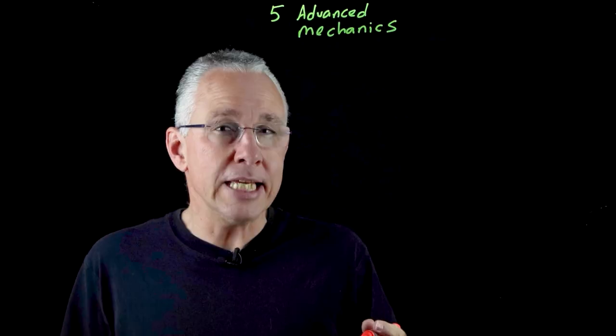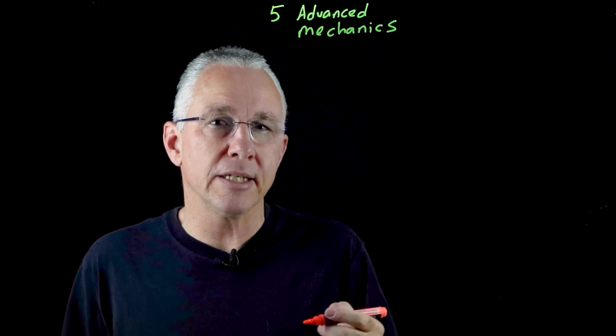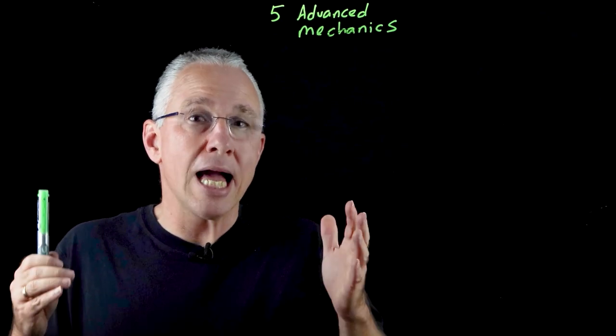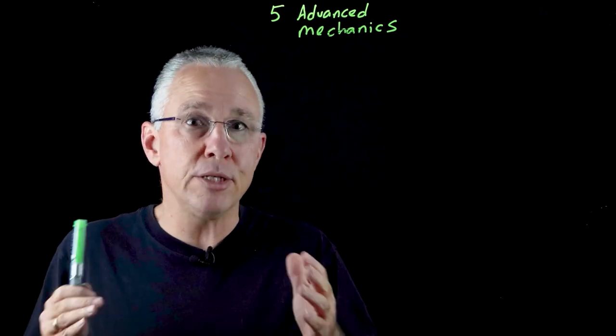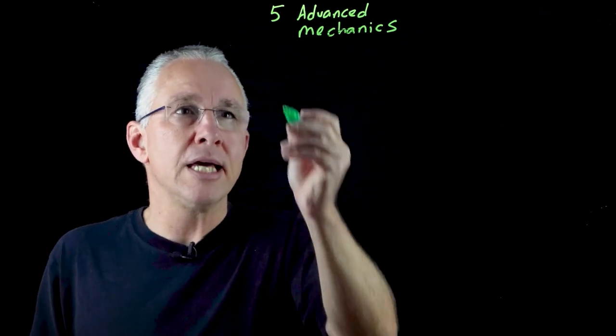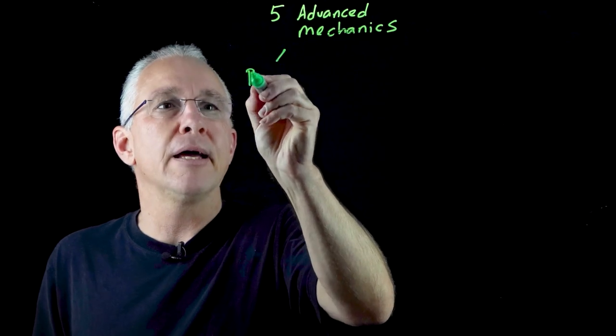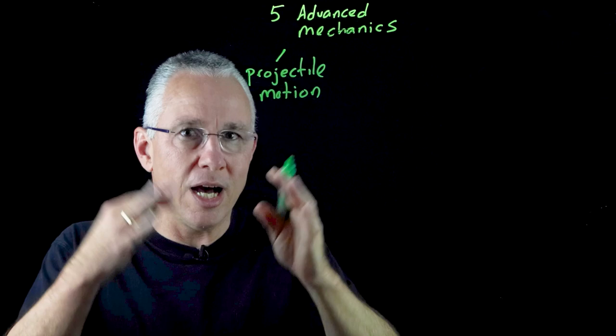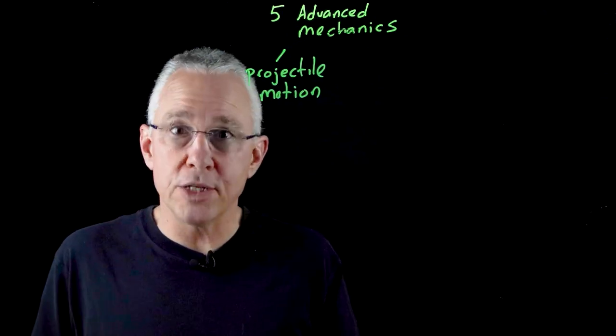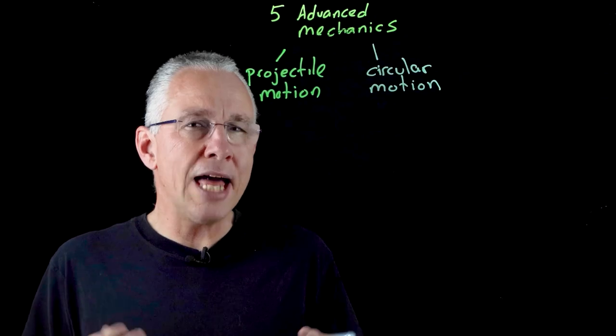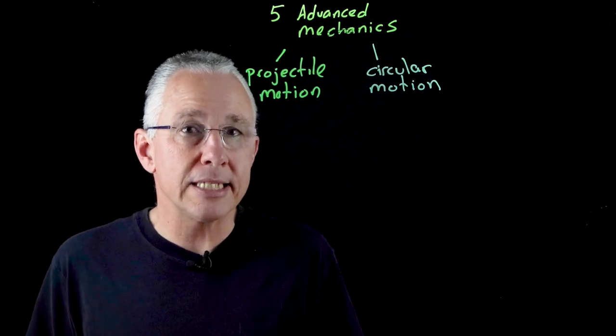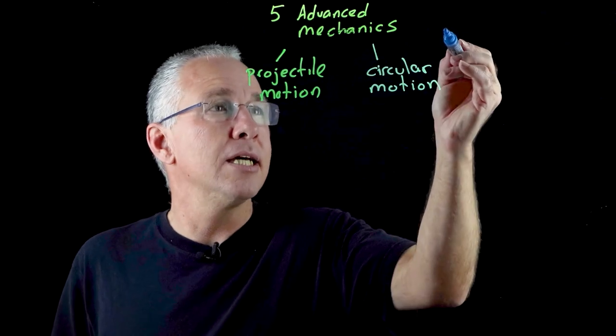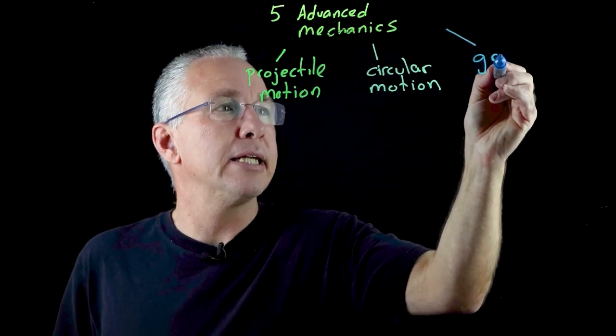Now Module 5 is broken down into three distinct inquiry questions. The first inquiry question is how are models that are used to explain projectile motion used to analyze and make predictions? I'm going to simplify by simply writing projectile motion. The second inquiry question says why do objects move in circles? And the final inquiry question states how does the force of gravity determine the motion of planets and satellites? And I'm going to simplify it by just simply writing gravity.